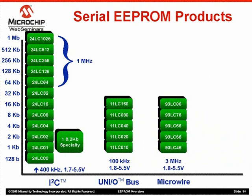Now we'll look at the Microwire family. This family is also available in 1 through 16 kbit devices, as limited by the Microwire protocol. The part numbering scheme starts with a 93 prefix and ends with 46 for 1 kbit, 56 for 2 kbit, and so forth. Although it has a narrower density range, Microwire is faster than I2C and UNEO parts at 3 MHz. This family has four signals, so it requires four micro IOs, as opposed to the two-wire I2C bus and the single-wire UNEO bus.